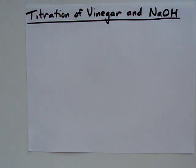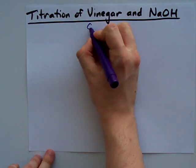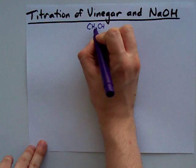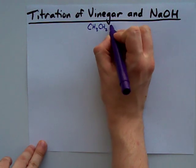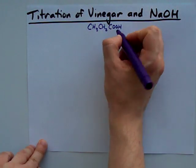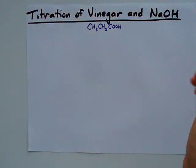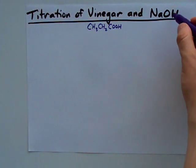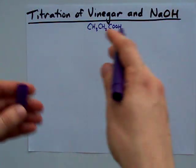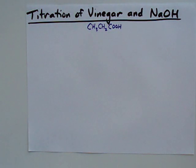I want to take a little time to give you an overview of the titration of vinegar with sodium hydroxide. Vinegar is also known as acetic acid — that's CH3CH2COOH — and it's that H at the end that can come off, react with the OH to make water, and that's why there's a neutralization here.